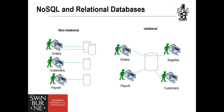Relational databases are designed to be integration databases — a central data store for applications working on related entities. When a customer is updated, the new data is instantly available to all applications using the same data store, because relational databases keep a single copy of each entry in a consistent state. But if all applications compete for one customer entry, some may have to wait and the database can take a long time to respond.